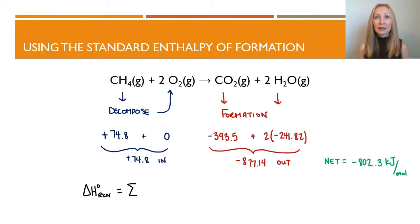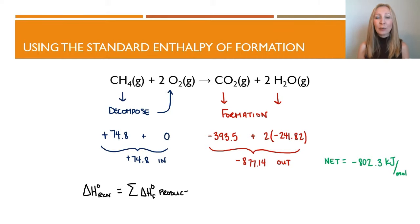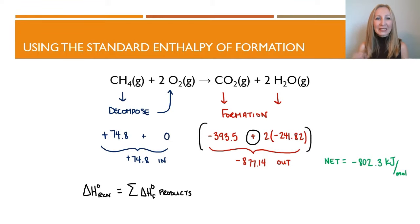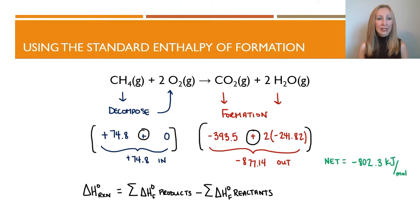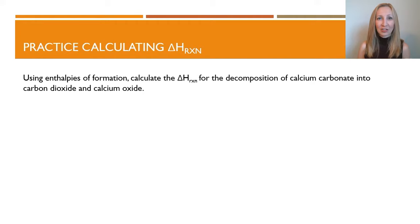One way you will often see this written is as an equation: the standard heat of reaction equals the sum of the standard heats of formation of the products — that sigma symbol represents the sum of all products — minus the sum of the standard heats of formation of the reactants. Plugging everything in using that equation gives us the standard ΔH of reaction, or the standard enthalpy change of a reaction.